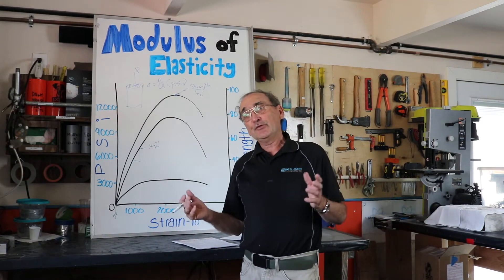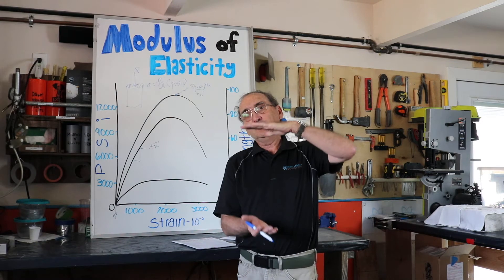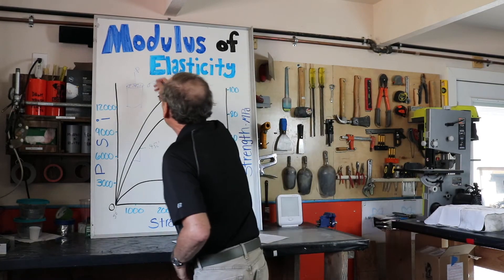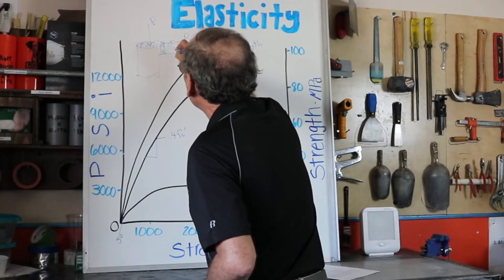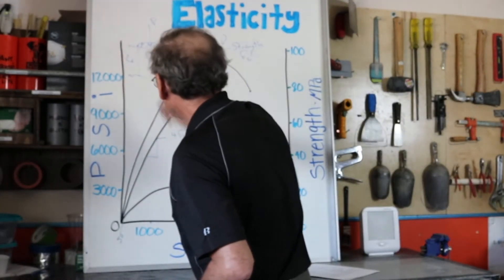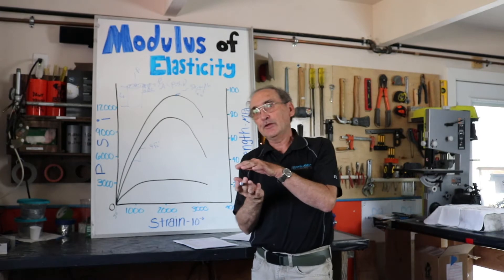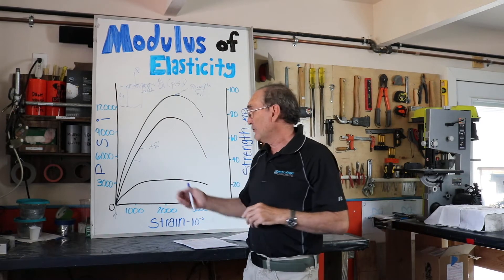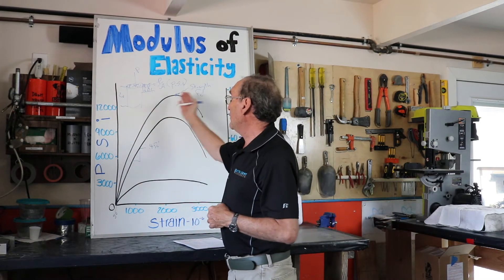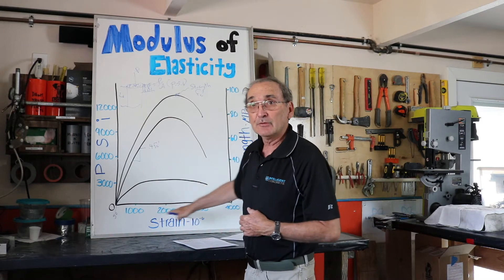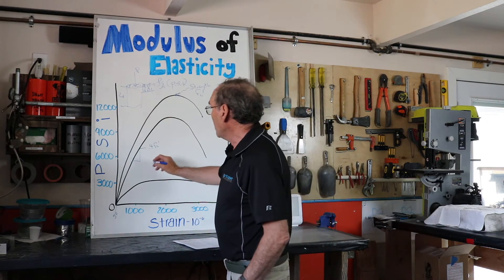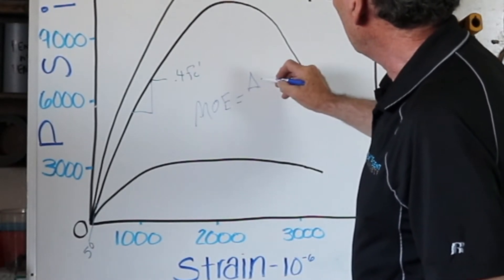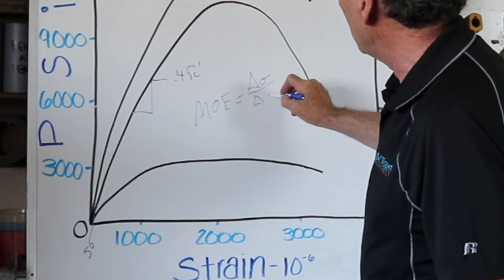We've talked about load and stress. Strain is what happens when you put a load on a material or object — it shrinks. When we do this, we get a change in length. Strain is the change in length divided by the initial length. This gives us a two-parameter graph: one based on load and area (stress), and one based on deflection caused by the load. The modulus of elasticity is the change in stress divided by the change in strain.